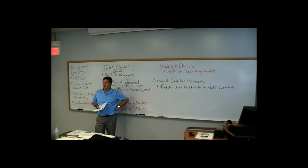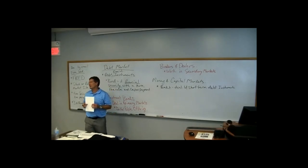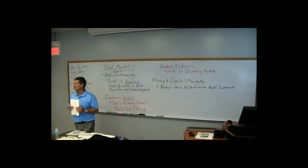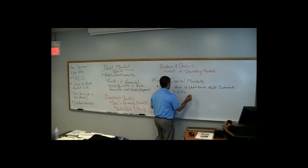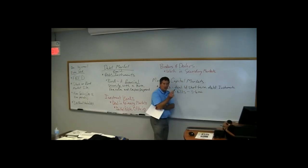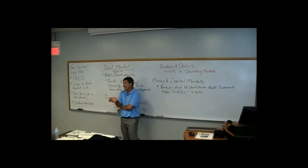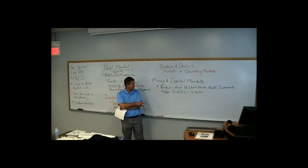What is the bank putting the money into? Short-term debt instruments — government bonds, which when short-term are called T-bills. Government T-bills are Treasury certificates that are usually three to six months in nature, turning over all the time. Very low interest, very safe, because the government hasn't officially defaulted on anything. They've always paid their bills back. That is the money market.